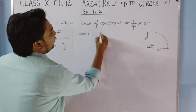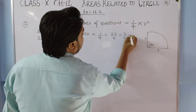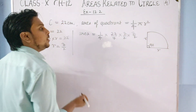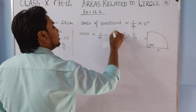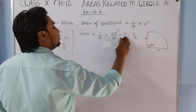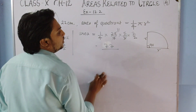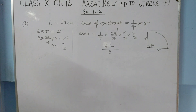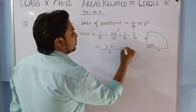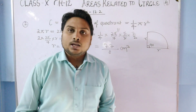Now we find the area of the quadrant: (1/4) × (22/7) × (7/2) × (7/2). The 7s cancel, 2 cancels 22 into 11 times, leaving 77 in the numerator and 8 in the denominator. So the area is 77/8 cm².